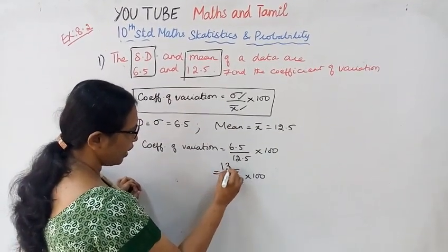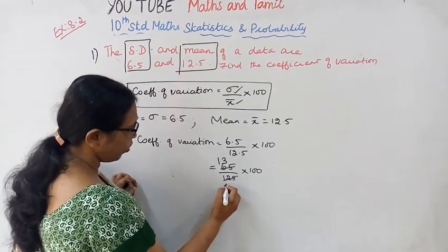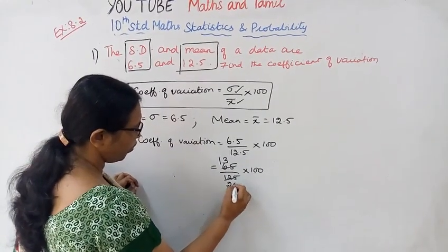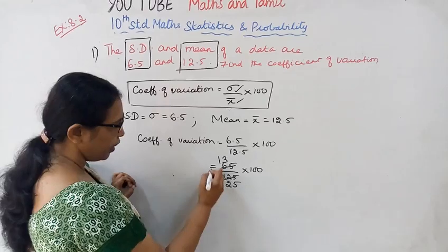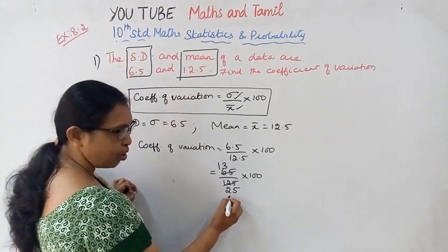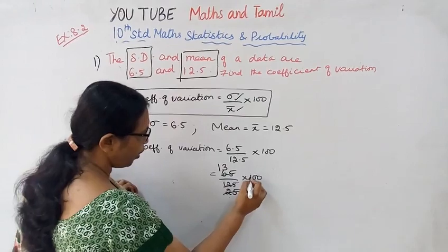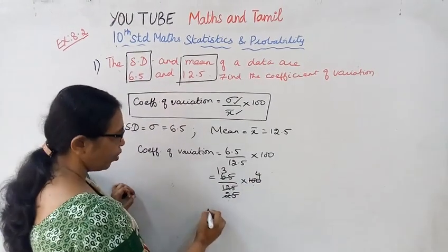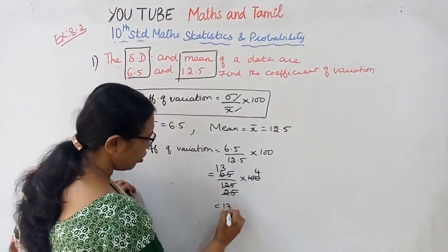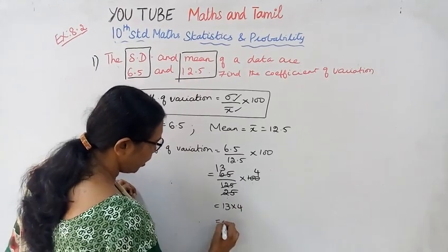13 into 4. Five into 25 will cancel. 25 and 100. Four times 25 is 100. 13 into 4, that is equal to...